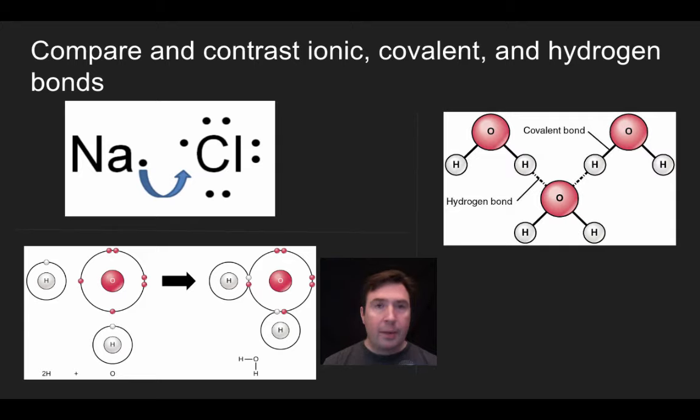So these two are examples of chemical bonds where atoms are held together and form specific bonded compounds. Now, on the right-hand side, in addition to showing the covalent bond that's between the hydrogen and oxygen, we also have something labeled that's called a hydrogen bond.